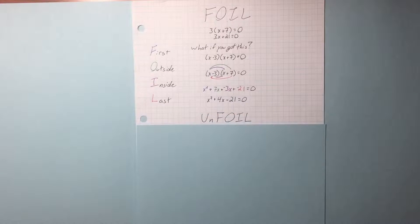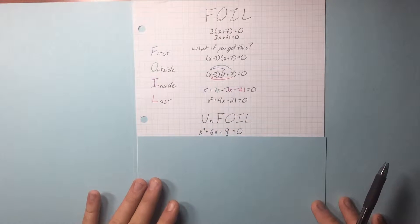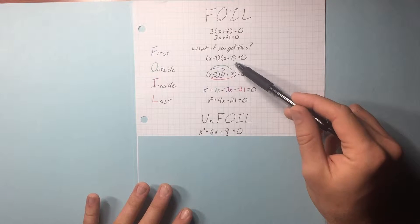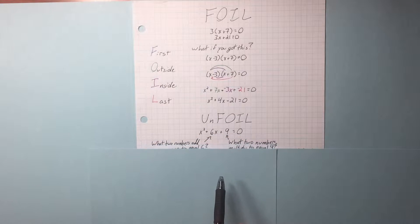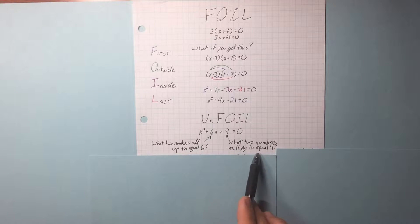How to unfoil? So let's say we are given an equation like this. Trying to get back to a place where we have two parentheses. We need to figure out what two numbers add up to equal 6 and what same two numbers multiply to equal 9.